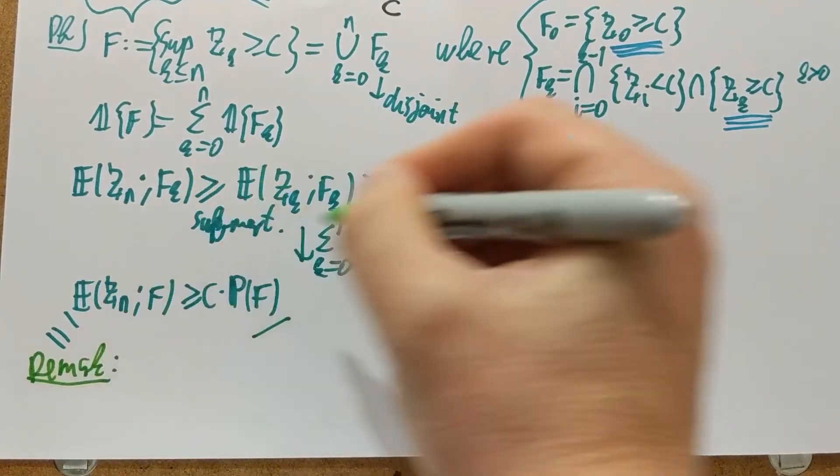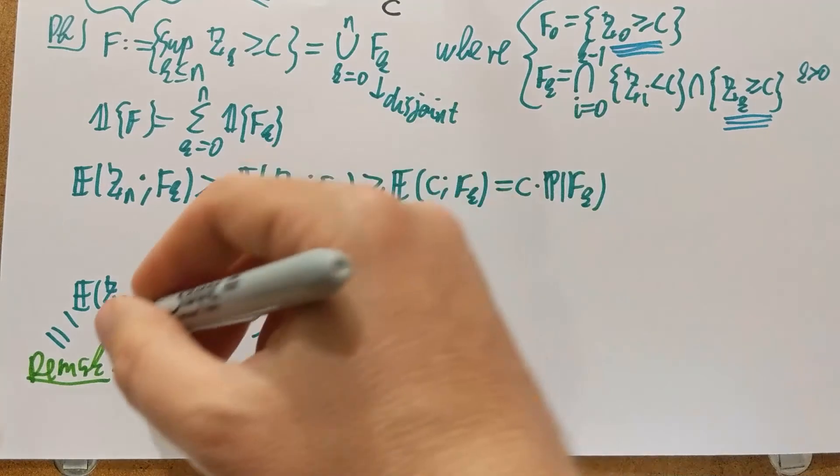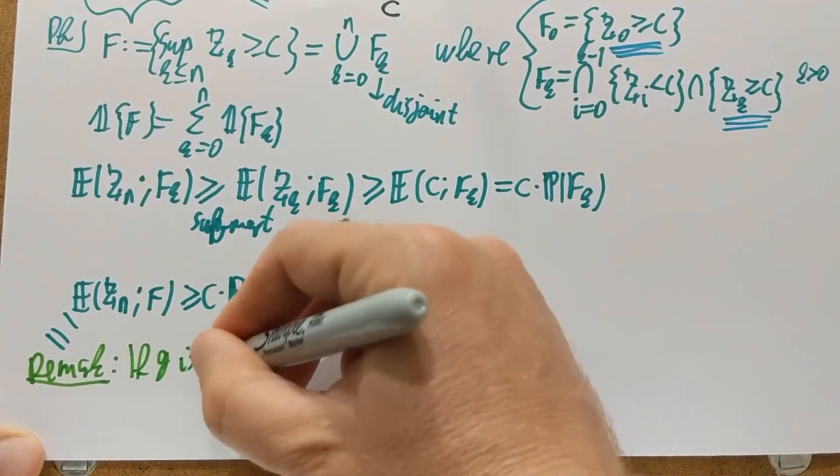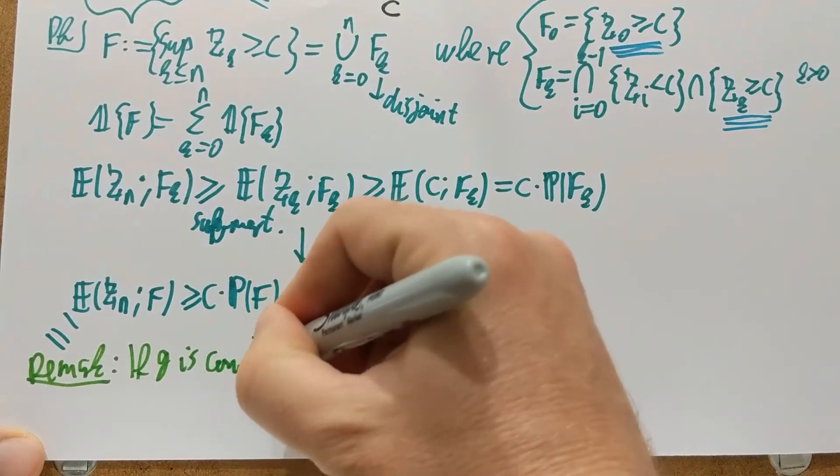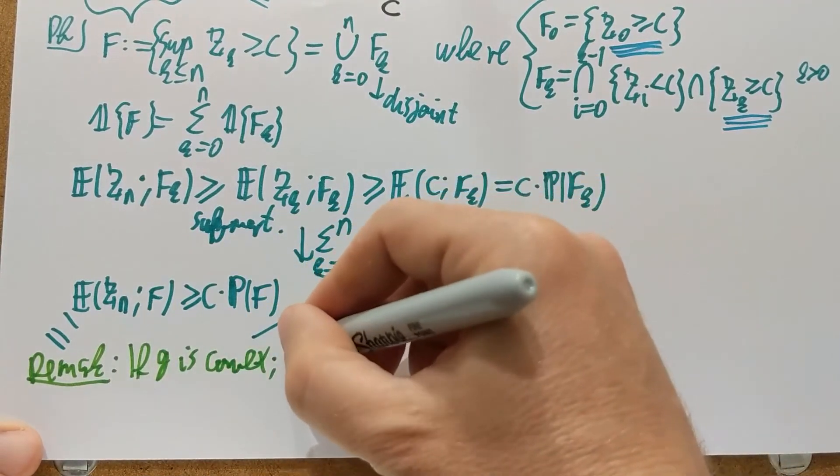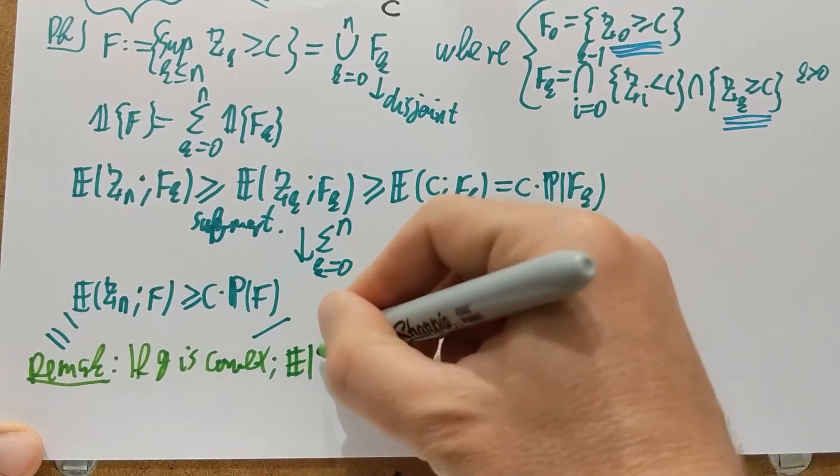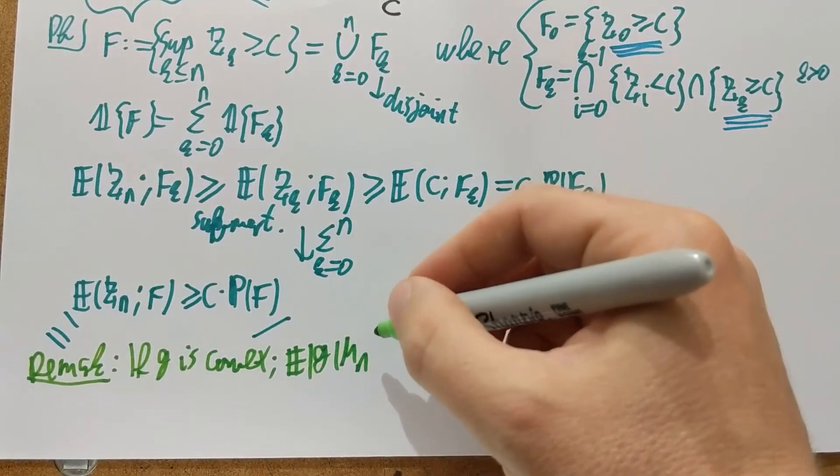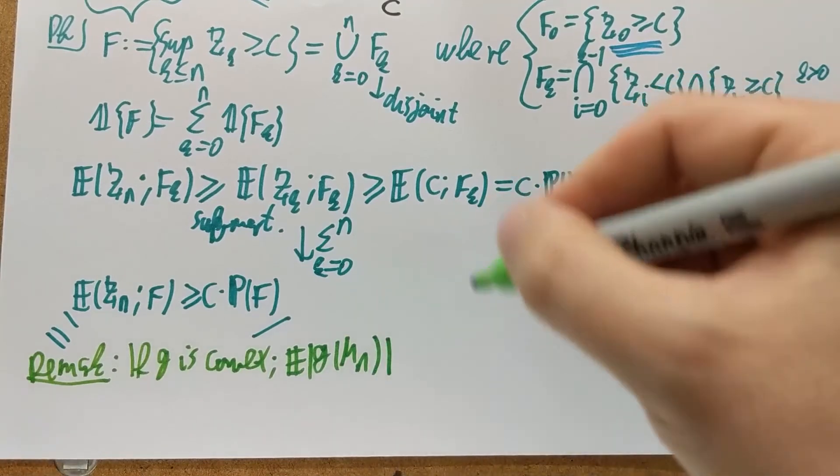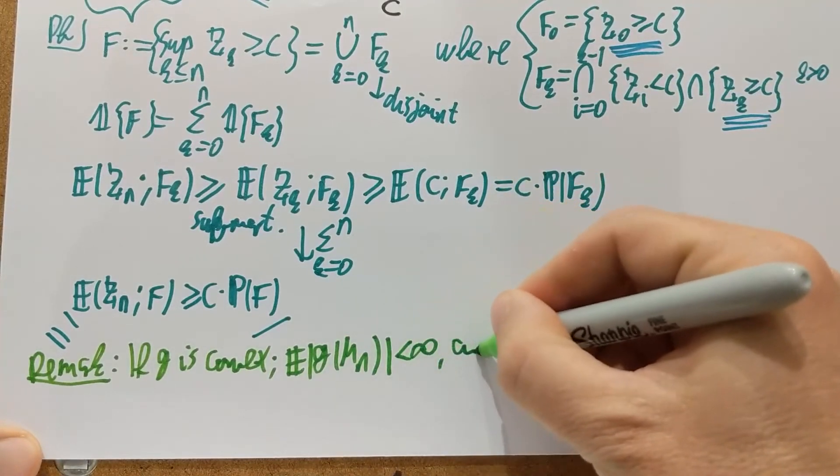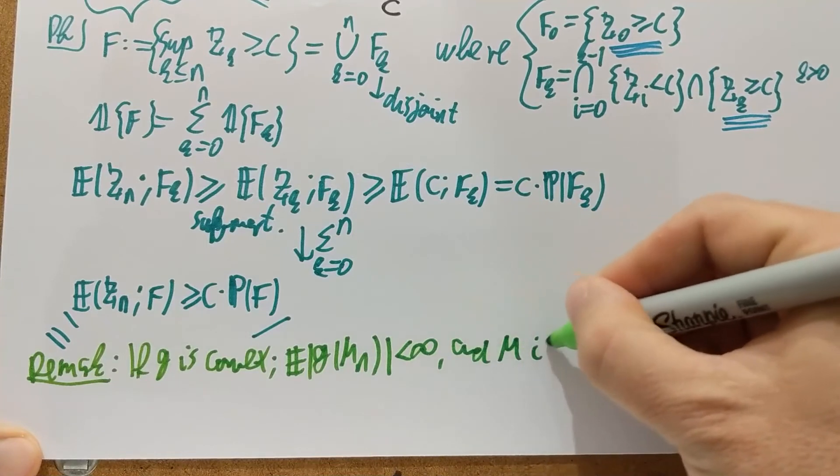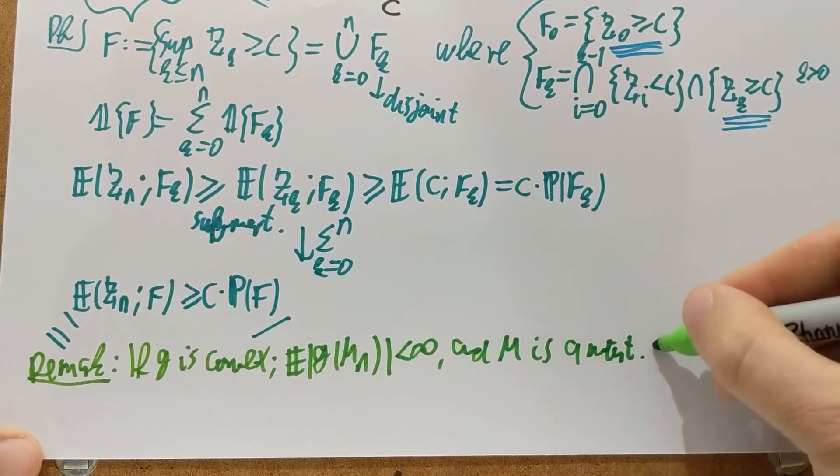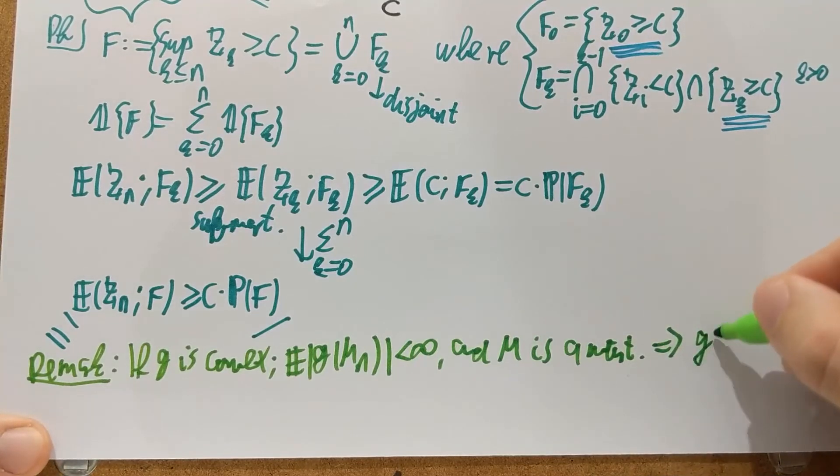What is a natural way of producing submartingales? If G is convex, a function is convex from real to real, and the expectation of the mode of G of M is finite and M is a martingale, then it follows that G of M is a submartingale.